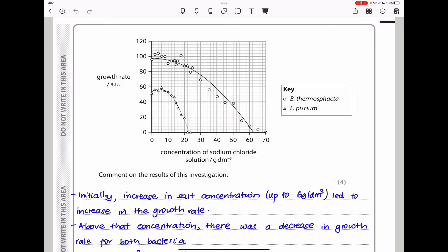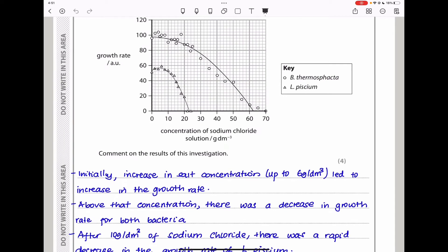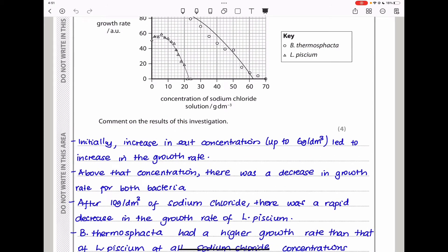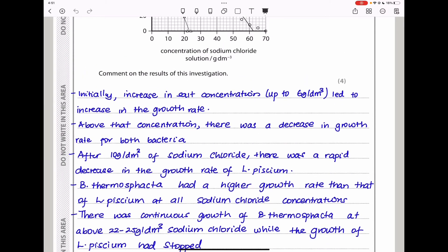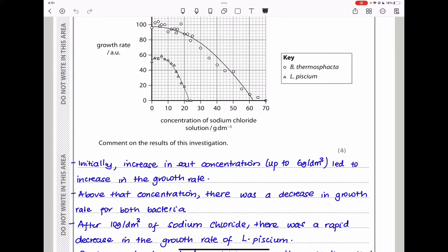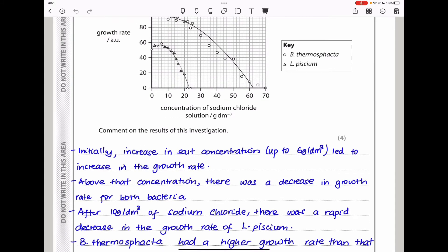On the vertical axis we see growth rate. On the horizontal axis we see concentration of sodium chloride solution. There was an increase in concentration of sodium chloride solution, and they monitored how the dependent variable varied using the two different bacteria: L. PCM and B. thumosfactor. They ask: comment on the results of this investigation.